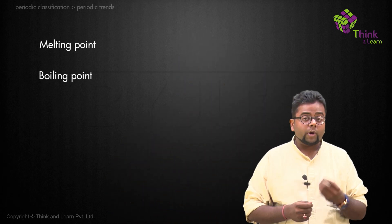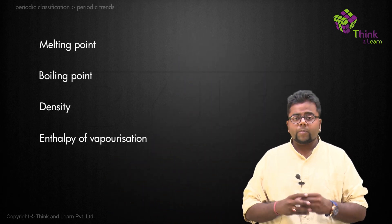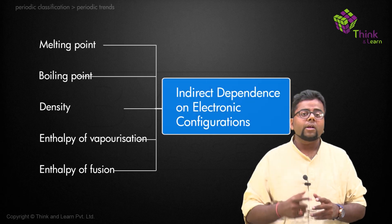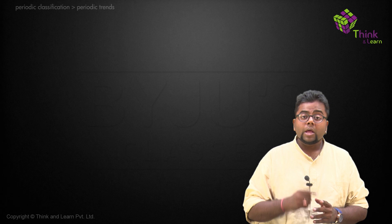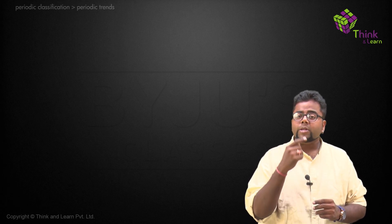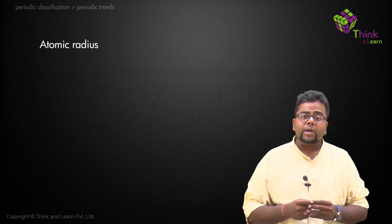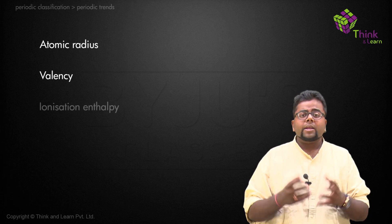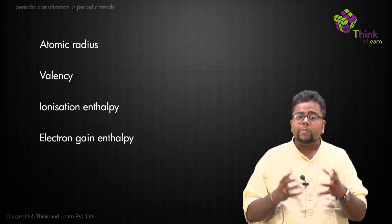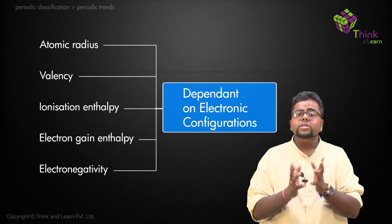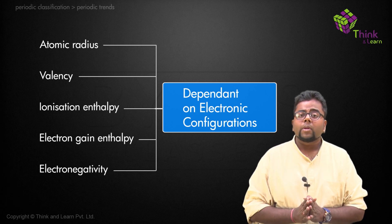There are numerous physical properties which show periodic variations such as melting point, boiling point, density, enthalpy of vaporization, and enthalpy of fusion. But all these are indirectly related to the electronic configurations. What we will be dealing with is the physical properties which are directly dependent on the electronic configuration, such as atomic radius, valencies, ionization enthalpy, electron gain enthalpy, and electronegativity. These are the five or six properties we will be taking up in this chapter.